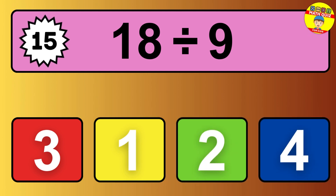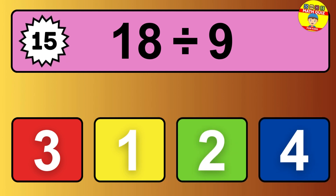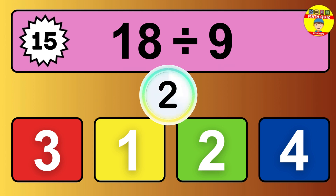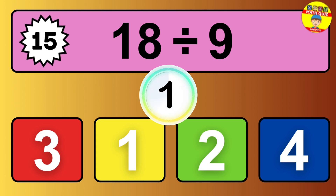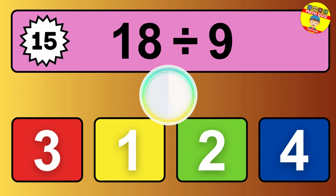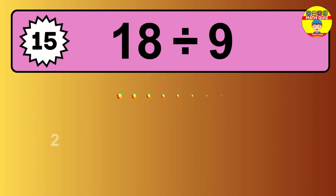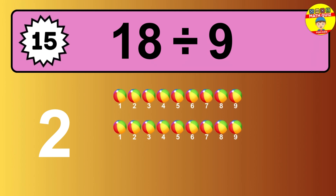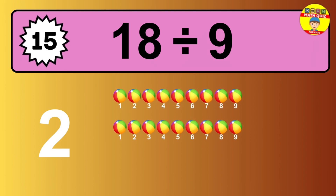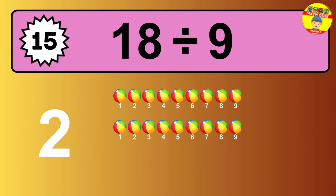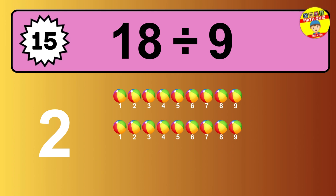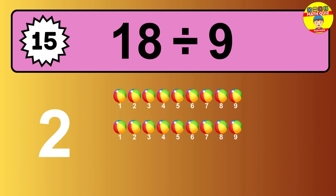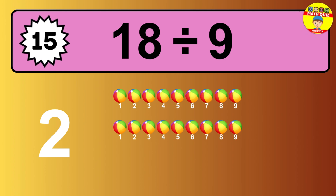18 divided by 9 — time to think. Let's go to the solution. Divide the number 18 by 9. Each group contains 9 units, so dividing 18 by 9 results in 2 equal groups. Thus, the result is 18 divided by 9 equals 2.